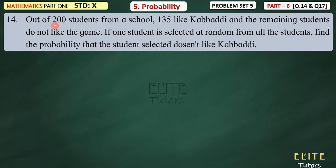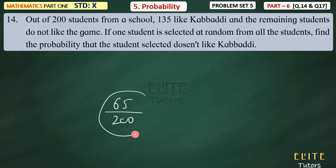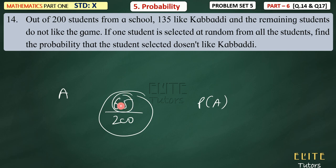If 135 people like buddy, then 65 people don't like it. So if 65 out of 200 people don't like it, that's the probability we need. Our question is: find the probability that the student selected doesn't like a buddy. If we take event A, then N(A) will be 65, because there are 65 people who don't like it. We will simplify and get the answer.